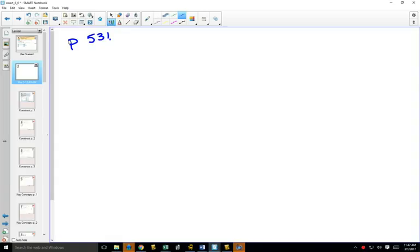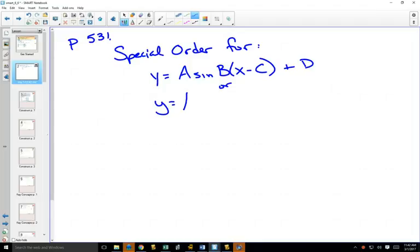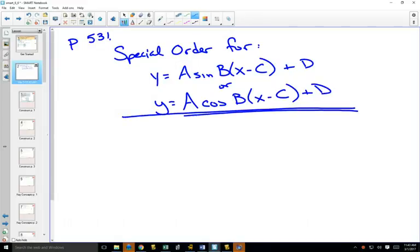So at the top of page 531, you have some space, and we're going to summarize what happens when you have all four of these transformations, what we're going to do as a special order for this.